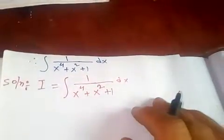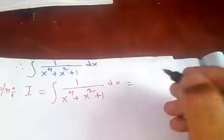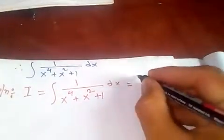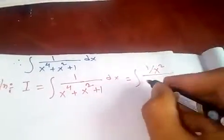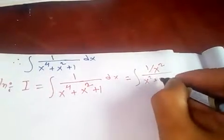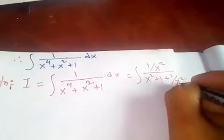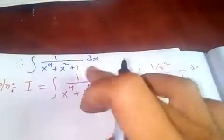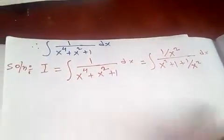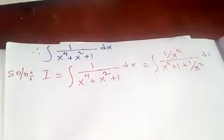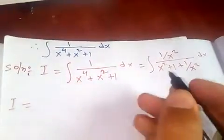Now if you divide both numerator and denominator by x squared, you will get 1 over x squared, divided by x squared plus 1 plus 1 over x squared. Dividing both numerator and denominator by x squared, you get this, which we can simplify further.